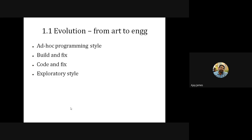Next is the evolution from art to engineering. In earlier days, software development was considered an art because only a few people knew how to write code — in the 1960s, 70s, and 80s. They wouldn't reveal their code to others; every code was hidden. Software people were considered artists because there was no principle followed and outsiders didn't know what was written inside.